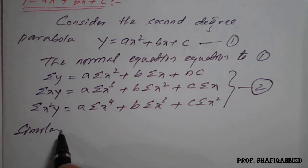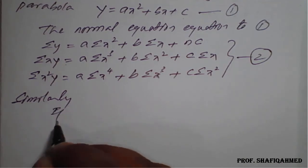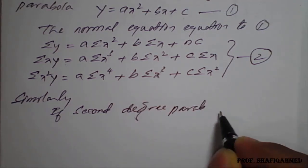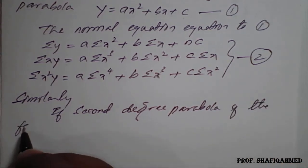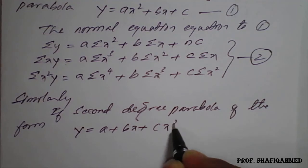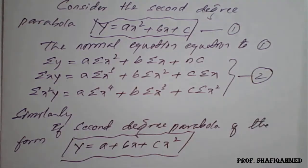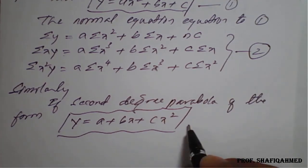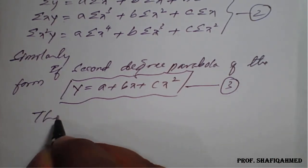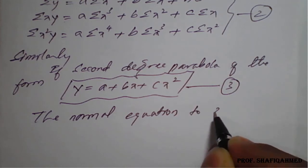Similarly, if the second degree parabola is of the form y = a + bx + cx², this is also a valid second degree parabola form, and both forms are equivalent. We assign this equation number 3, and for this we also need to prepare normal equations.